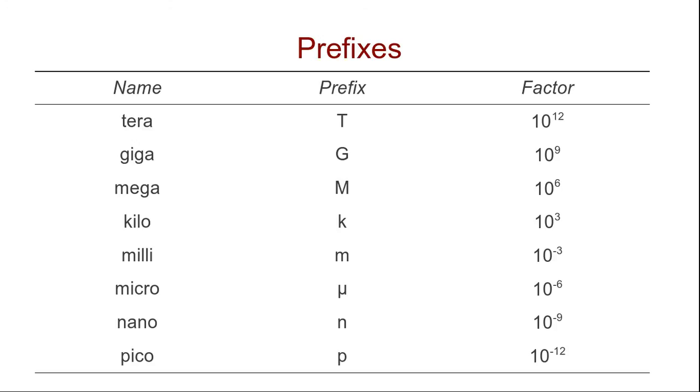Note of course the factors differ by a factor of 10 to the power of 3 or 1000. So kilo, 10 to the power of 3. Going up to mega, 10 to the power of 6, 10 to the power of 9, 12. And same going down, 10 to the power of minus 3, minus 6, minus 9, minus 12. So very easy to remember those factors.